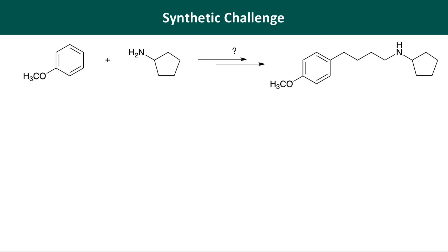Let's end with a synthesis question. We have to construct an amine, and our starting material also appears to be an amine. This is a good clue that reductive amination could be at play, because we need to create a new carbon-nitrogen bond. Looking at the starting material closely, the new C-N bond we have to make is the one highlighted in blue.